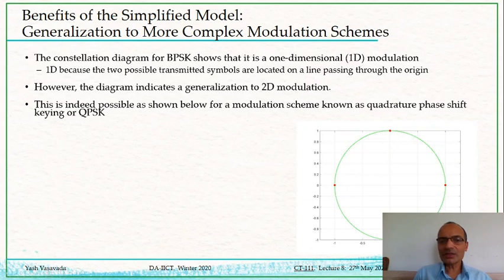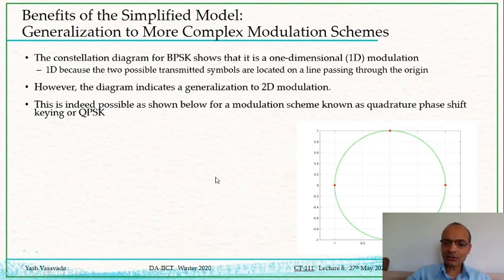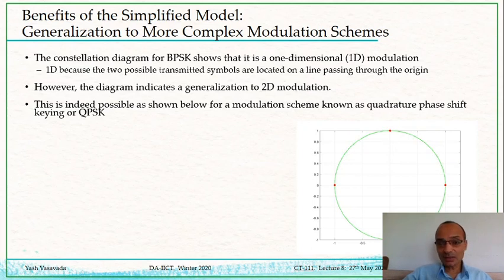Indeed, the constellation diagram can be generalized to two dimensions. These four constellation points cannot all be put on the same line — we need two different perpendicular dimensions to represent these four different constellation points. The corresponding modulation scheme is known as Quadrature Phase Shift Keying (QPSK).